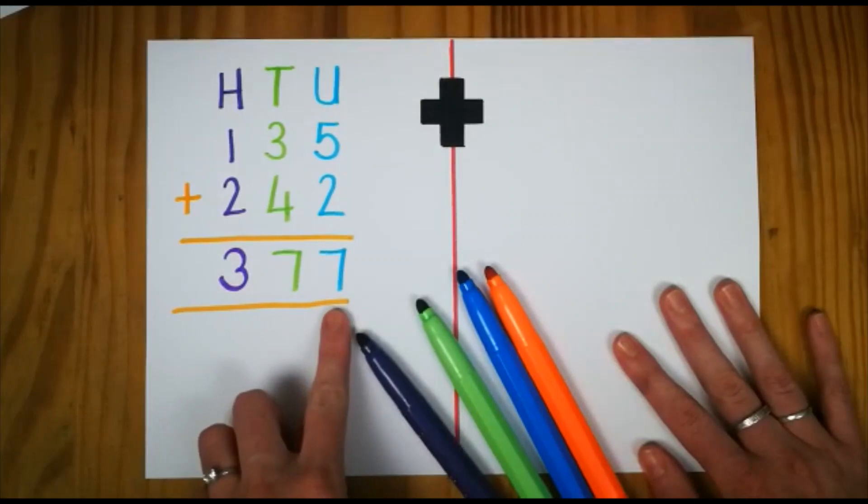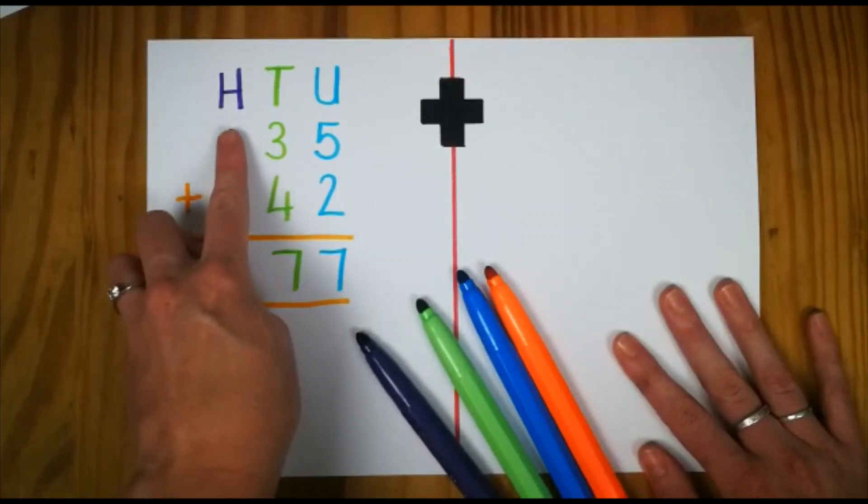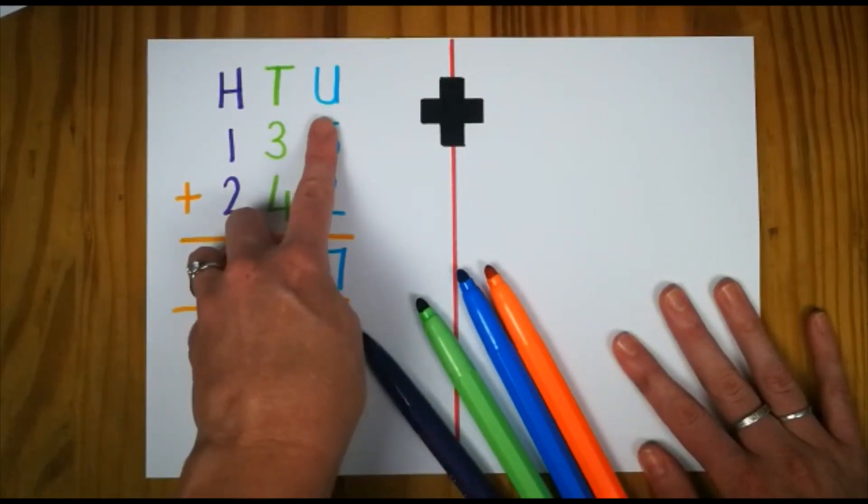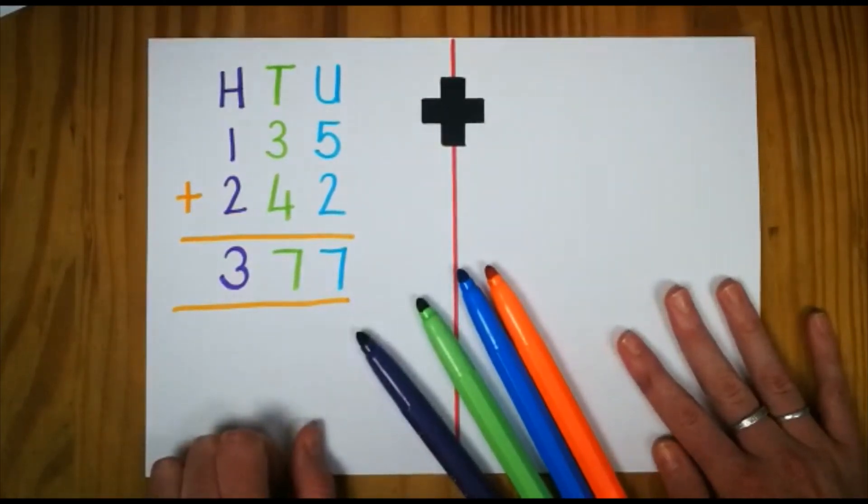377. I've got three hundreds, seven tens, and seven units. It's pretty simple. But sometimes it can get a little bit tricky.